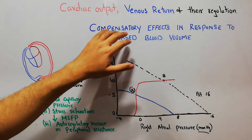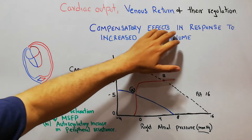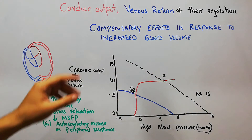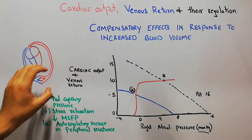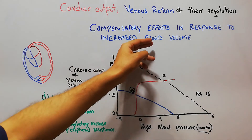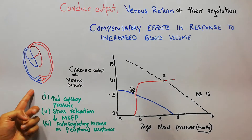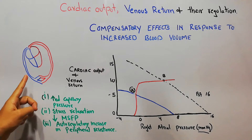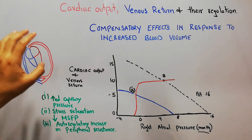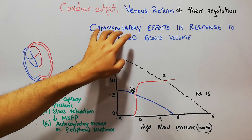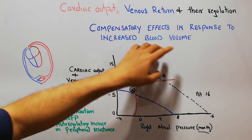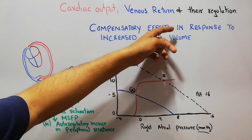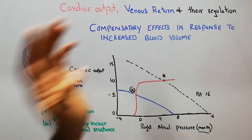Today we are going to discuss the compensatory effects in response to increased blood volume. If the amount of blood in the body is increased by injecting more blood or more fluid into the circulatory system, how will the body compensate for this increased volume?